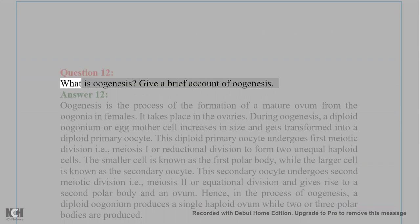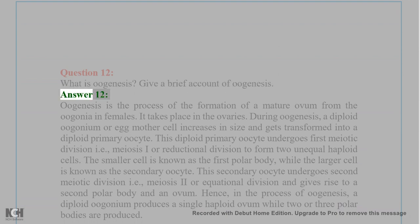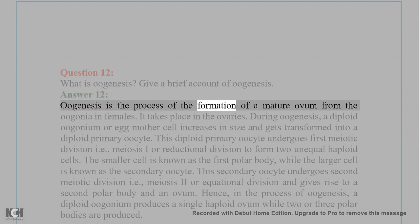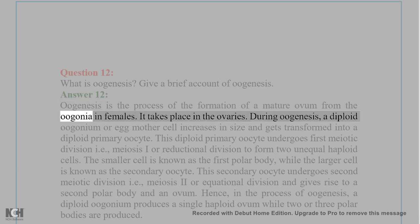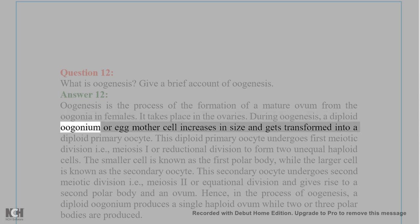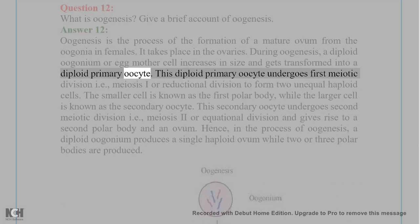Question 12: What is oogenesis? Give a brief account of oogenesis. Answer 12: Oogenesis is the process of the formation of a mature ovum from the oogonia in females. It takes place in the ovaries. During oogenesis, a diploid oogonium or egg mother cell increases in size and gets transformed into a diploid primary oocyte.